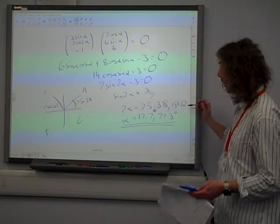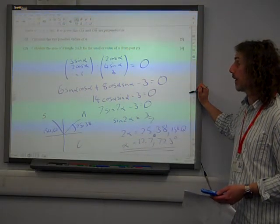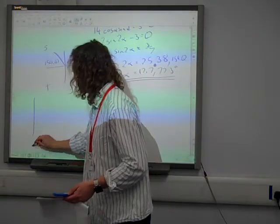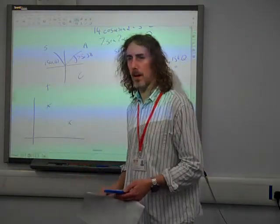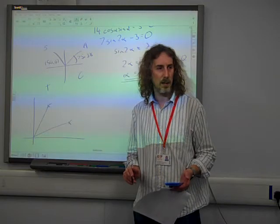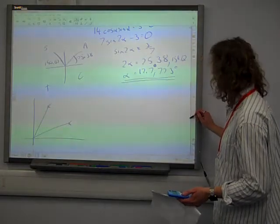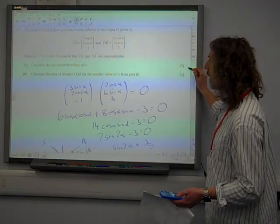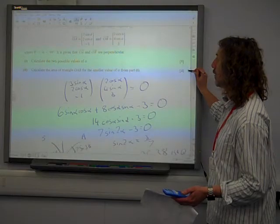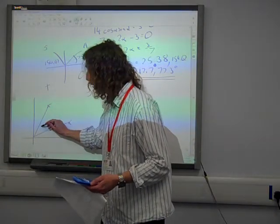That was part one. Part two said calculate the area of triangle OAB for the smaller value of alpha from part one. So we've got two points. It doesn't matter exactly where they are in space, but we are told that this angle here is a right angle. This is 90 degrees.